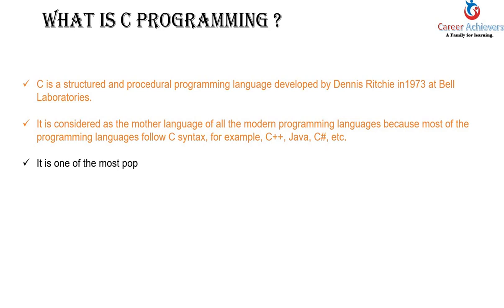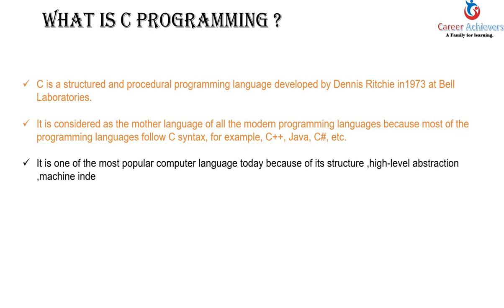C is one of the most popular computer languages today, because of its structure, high-level abstraction, machine independent feature, and because it is reliable, simple, and easy to use. Aaj ke samay mein programmer programming start hi isi language ke saath karta hai. Ismein programming karna bahut hi aasaan hota hai. Isi karan aaj yeh bahut zyada popular hai.